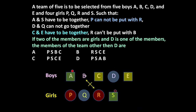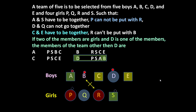We have selected three boys: A, B and D. C and E cannot be selected. Now one more girl has to be selected. Since boy B is in the team, R cannot be there. Out of P and R we select only one girl, so the second girl will be P. The team of 5 is A, B, D, P, S.